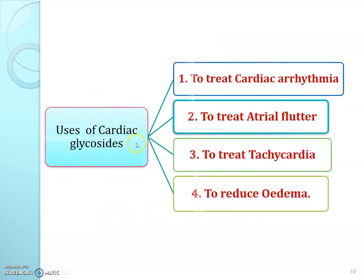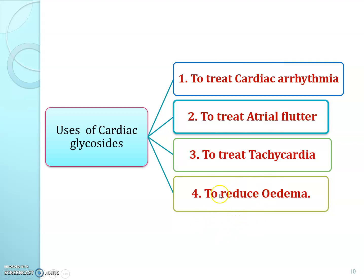See the uses of cardiac glycosides. They are used to treat cardiac arrhythmia, atrial flutter, tachycardia, and to reduce edema. They increase blood flow to the kidney and modify renal functions, causing diuresis, hence they are useful in reducing edema.